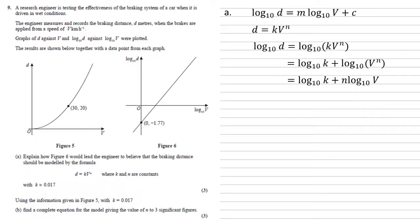We can see from the graph that the line goes through the point 0 negative 1.77. Setting our log d to negative 1.77 and log v to 0, we get that negative 1.77 equals log to the base 10 k. So k must equal 10 to the power of negative 1.77 equals 0.017 as required.